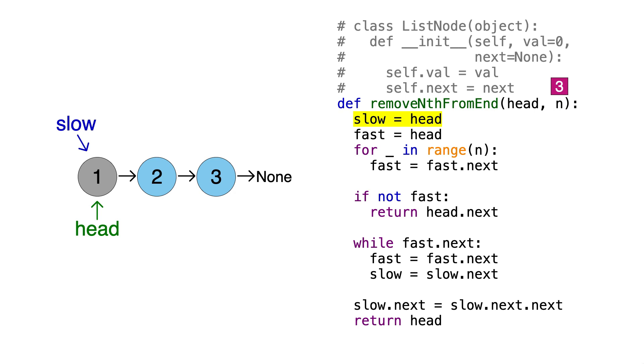Again, we'll create our slow and fast pointers, and we'll move up the fast pointer 3 times. So that's 1, 2, and 3.